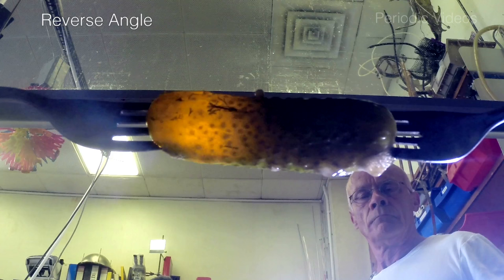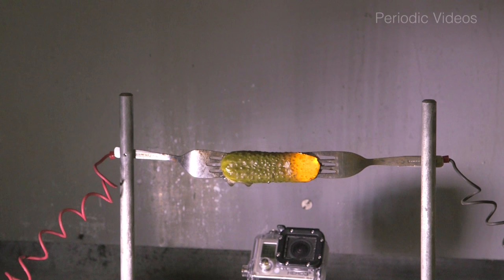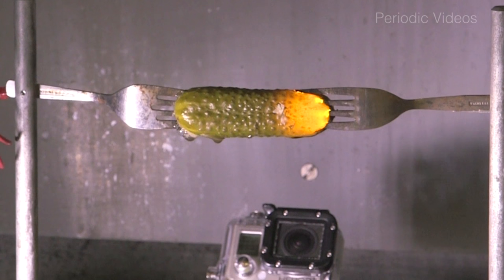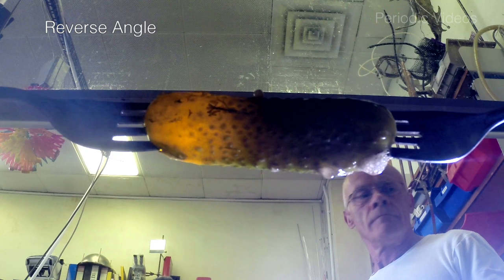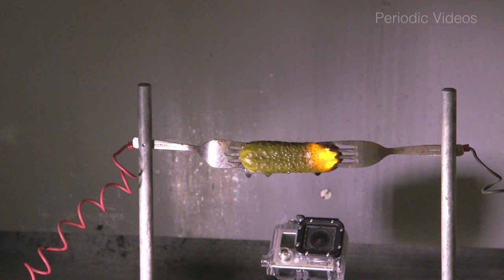The first thing to realize is that when you pickle something you put it into a mixture of salt and vinegar. Salt contains ions, sodium ions, chloride ions and salt solution is electrically conducting but it's not very electrically conducting compared to metal.